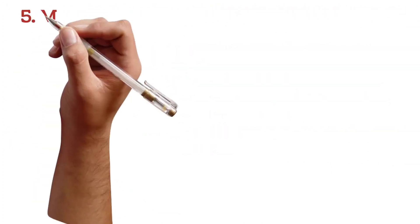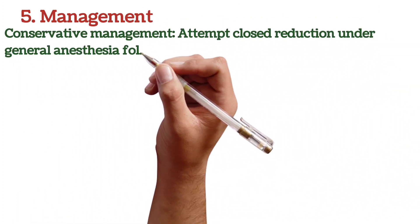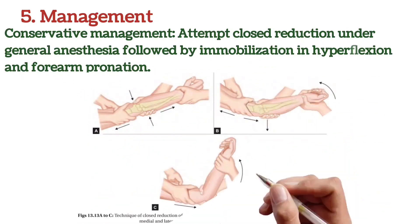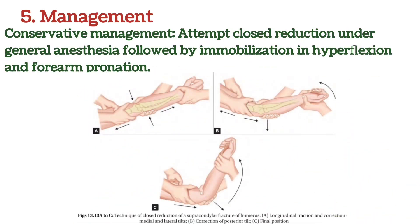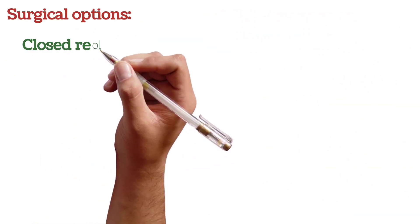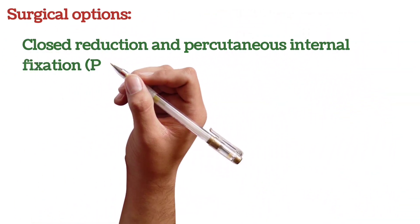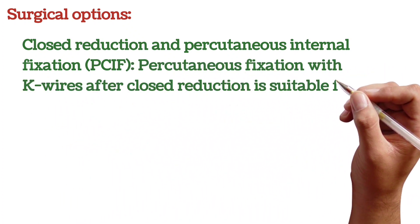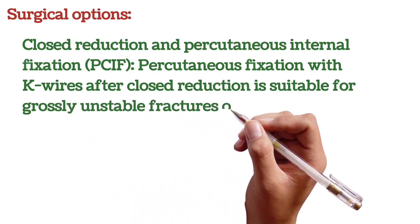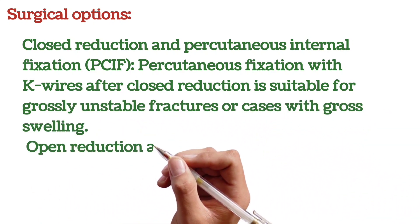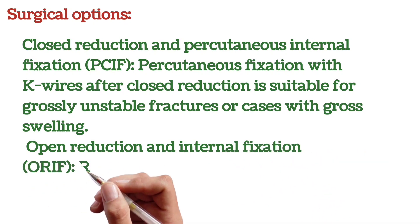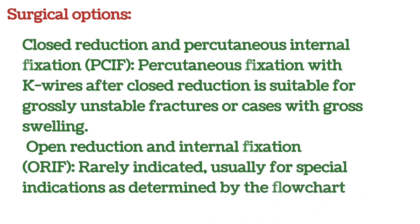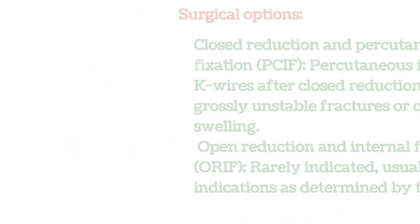Management — Conservative management: Attempt closed reduction under general anesthesia followed by immobilization in hyperflexion and forearm pronation. Surgical options include closed reduction and percutaneous internal fixation (CRIF): percutaneous fixation with K-wires after closed reduction, suitable for grossly unstable fractures or cases with gross swelling. Open reduction and internal fixation (ORIF) is rarely indicated, usually for special indications as determined by the flowchart.